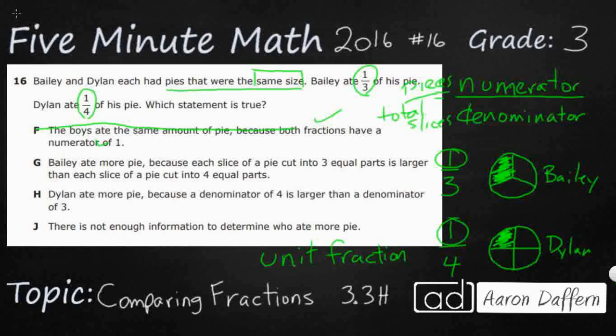So G says Bailey ate more pie because each slice of pie cut into three equal parts is larger than each slice of pie cut into four equal parts. That's what I think is correct. Even though the number three is smaller than four, when you cut a pie into three parts, each of those parts is slightly bigger than a pie cut into four parts. Bailey's piece is going to be bigger because three equal parts is larger than four equal parts.